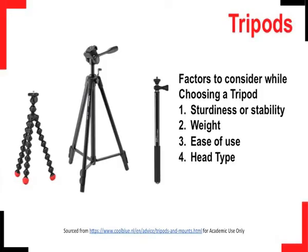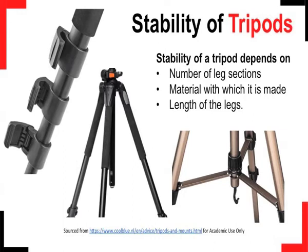Let us learn a little more about tripods. Tripods come in various sizes, load-bearing capacities and materials. The first factor for choosing a tripod is sturdiness or stability. The stability of any tripod will depend on the number of leg sections, the material with which the tripod is made, and the length of the legs. The best way to gauge the stability of a tripod is to test it by applying weight on it while fully open and checking if it vibrates or stays stable.